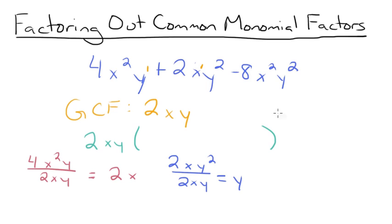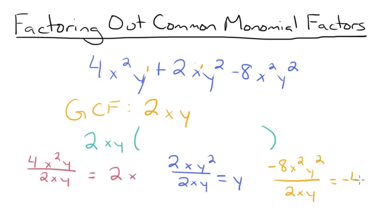Then we divide negative 8x squared y squared by 2xy. Remember to be careful of your signs. Negative 8 divided by 2 is negative 4. x squared divided by x is x. And y squared divided by y is y. So we have negative 4xy. We take these three terms, add them together, and put them inside our parentheses.